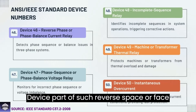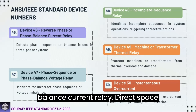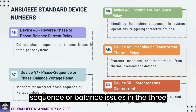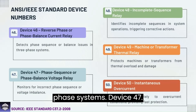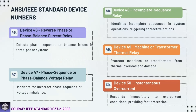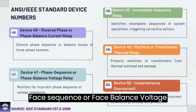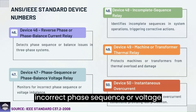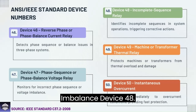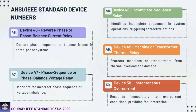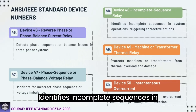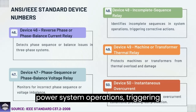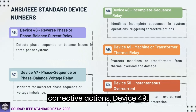Device 46: Reverse phase or phase balance current relay — detects phase sequence or balance issues in three-phase systems. Device 47: Phase sequence or phase balance voltage relay — monitors for incorrect phase sequence or voltage imbalance. Device 48: Incomplete sequence relay — identifies incomplete sequences in power system operations, triggering corrective actions.